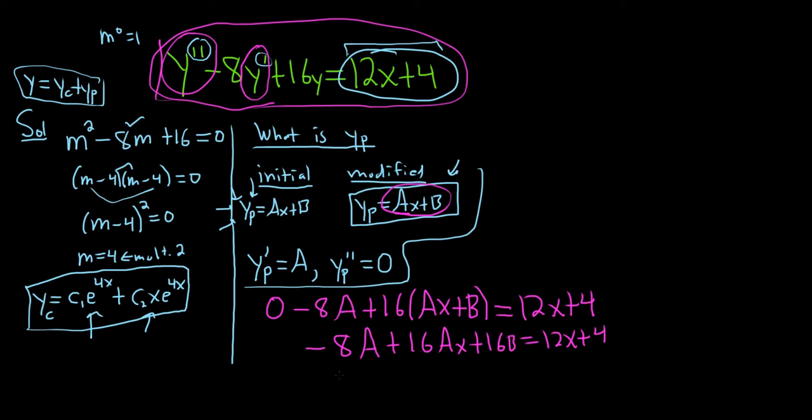Let's group the constant terms together. This is 16ax plus 16b minus 8a. And this is equal to 12x plus 4.